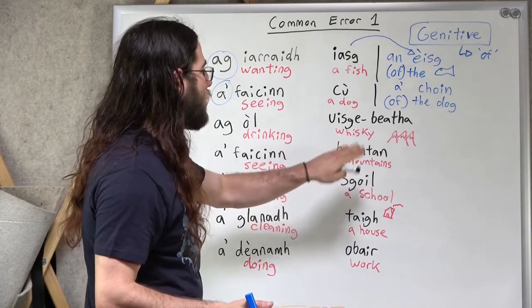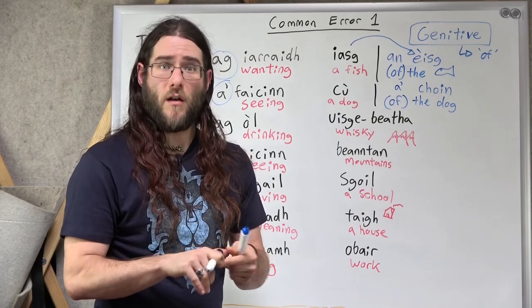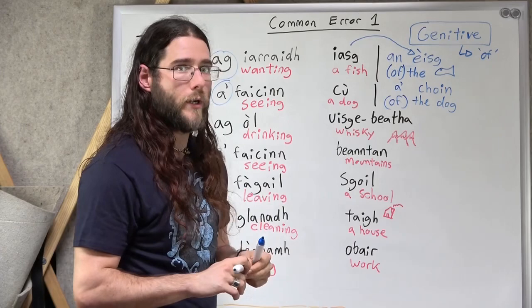Okay. Let's keep going here. Drinking whiskey. Ag òl uisge-beatha. Gléidh. What if I'm drinking the whiskey? In Gaelic, many things have that the on them. The whiskey. The breakfast. The dinner, for example. The morning.